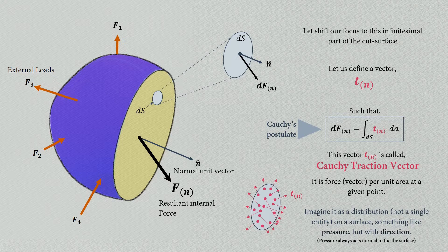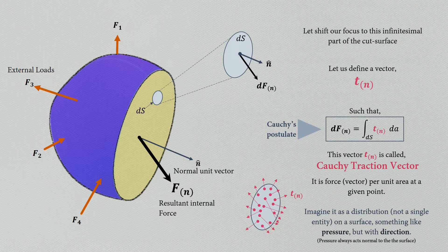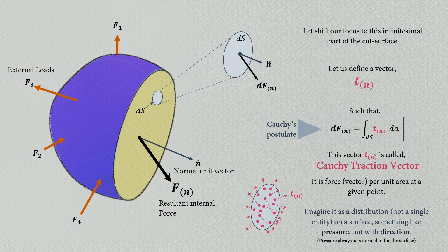This is also similar to pressure distribution inside a fluid, where at every point a pressure is defined. However, pressure in a fluid is always normal to the surface of observation. The traction vector in a solid also has a direction, but it is not necessarily normal — and this is what makes things different from the analysis of static fluids.